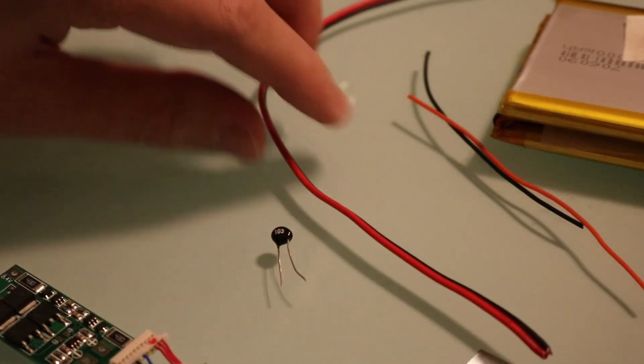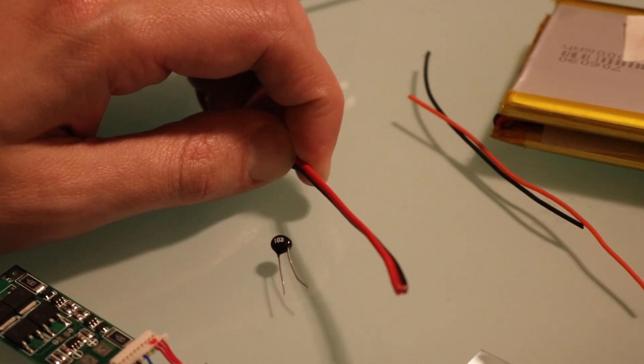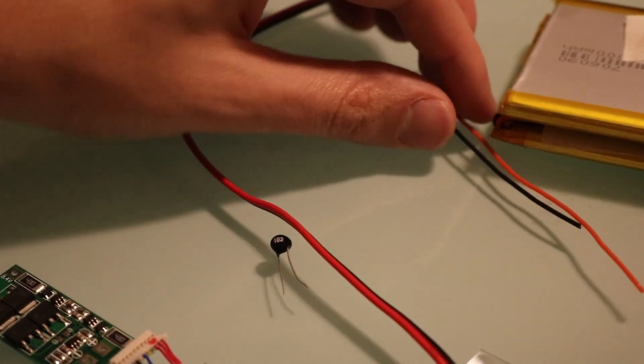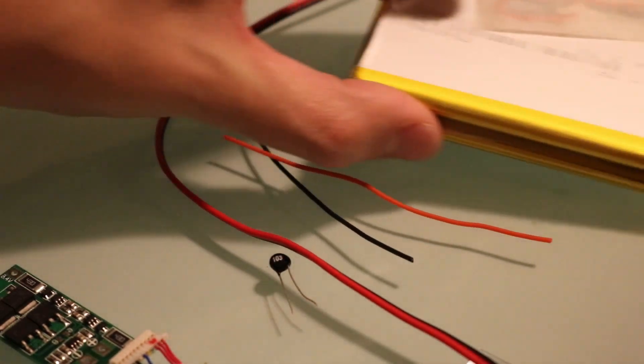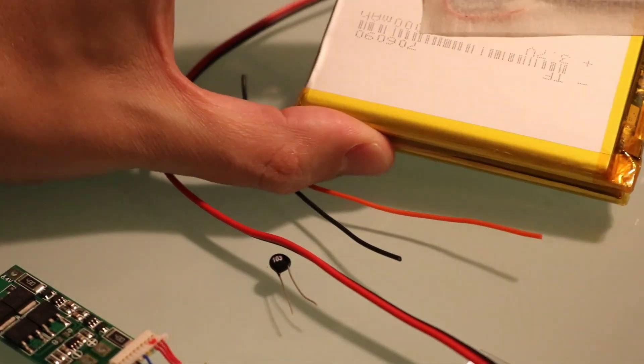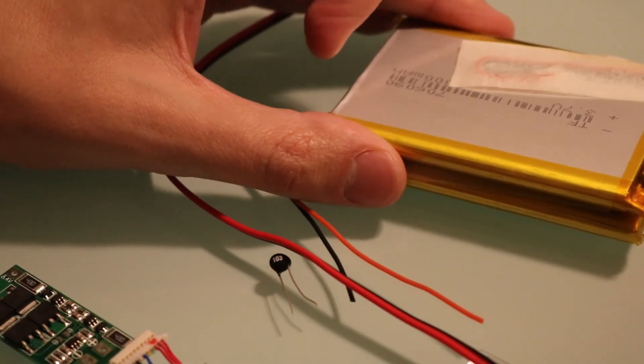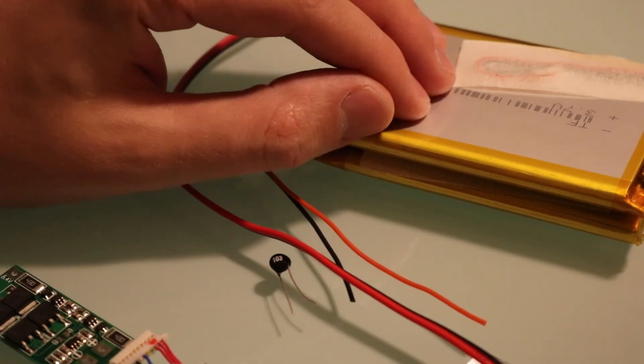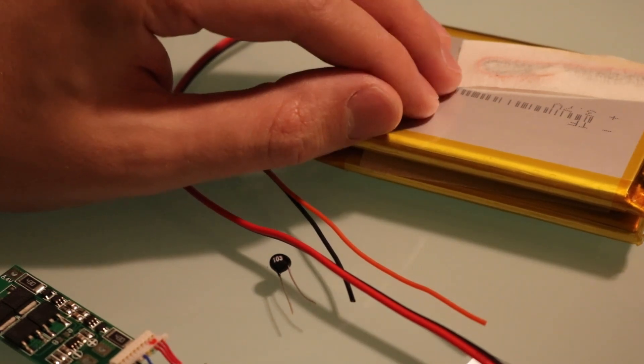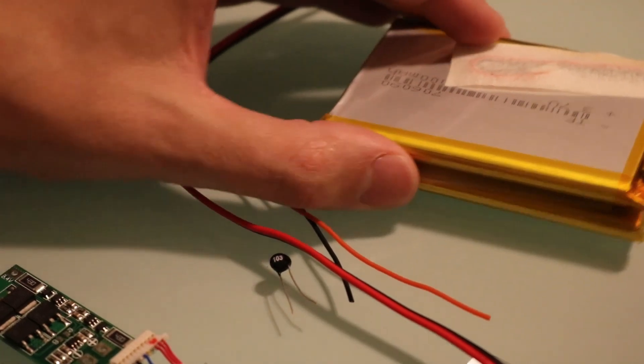We're going to need at least 24 gauge wire to carry the up to 3 amps the Latte Panda will take when charging, and some thinner wires for the thermistor. Lastly, I've got two 3.7 volt 5000 milliamp LiPo batteries. I chose this one specifically because of the size. Stacked, these are thinner than the Latte Panda, so when I make a case for them it will be a low profile case.